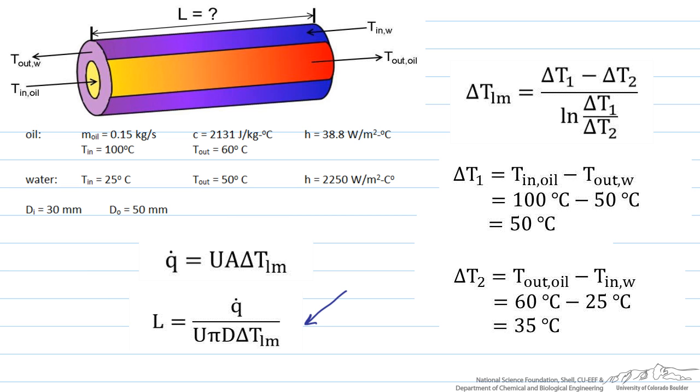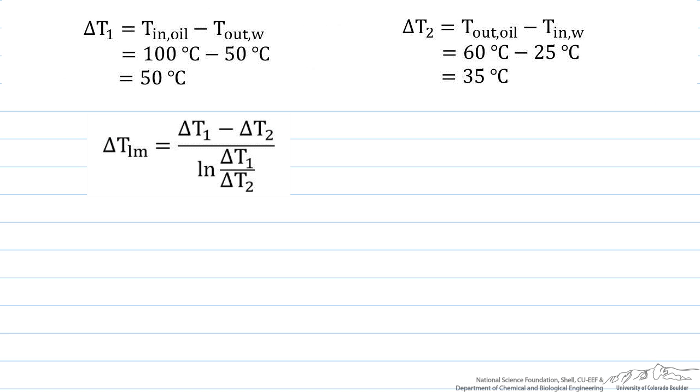Now let's find delta T log mean using these values. This is going to be delta T1, which is 50 degrees C, minus delta T2, which is 35 degrees C, all divided by the natural log of 50 degrees C divided by 35 degrees C. And when we calculate this, we find that our delta T log mean is equal to 42 degrees Celsius.